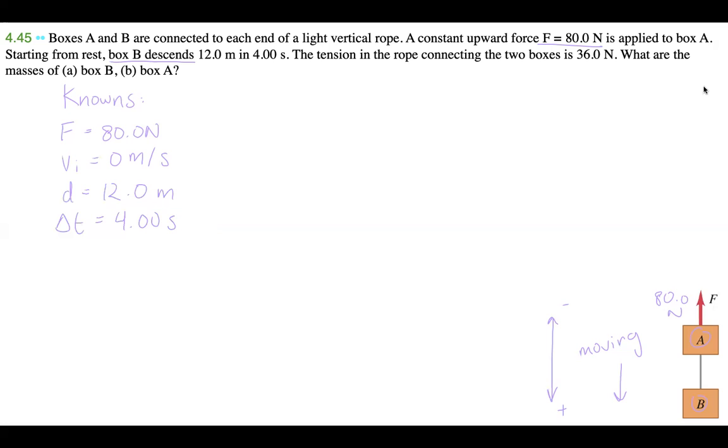This change of time is equal to 4.00 seconds. The tension in this rope is 36, so F_T is equal to 36.0 newtons. And we're looking for what mass of A is, and what mass of B is. We have no idea what those are, but we're going to figure that out in this question.